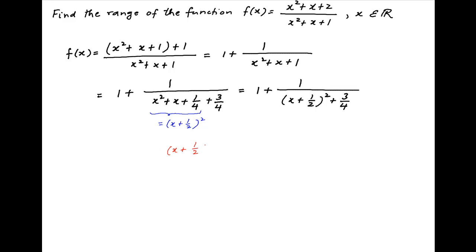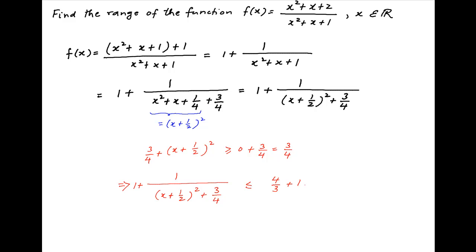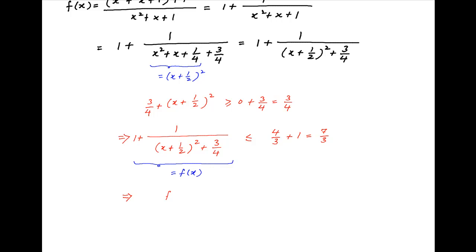Now (x + 1/2)² is always greater than or equal to 0. Adding 3/4 to both sides and taking the reciprocal, we get 1/((x + 1/2)² + 3/4) ≤ 4/3. Adding 1 to both sides, the left-hand side equals f(x), and therefore f(x) is always less than or equal to 7/3. Let's call this Result 1.